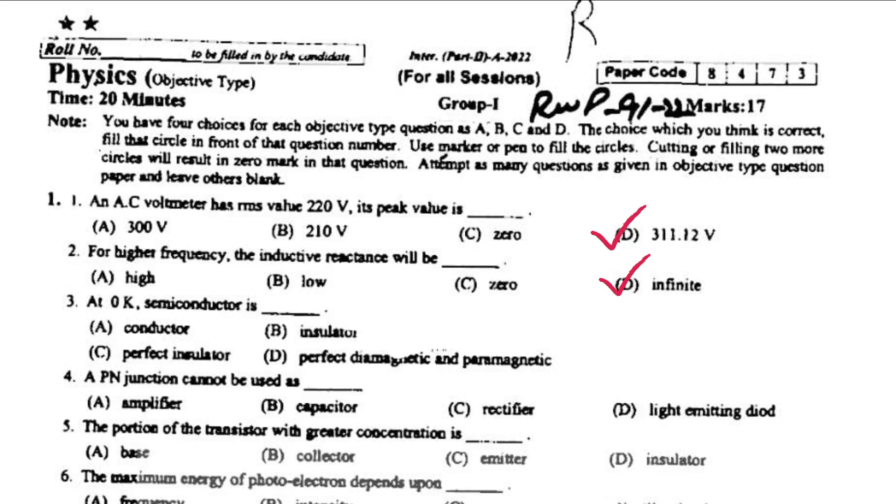At 0 Kelvin semiconductor is insulator. A p-n junction cannot be used as amplifier. The portion of the transistor with greater concentration is emitter.